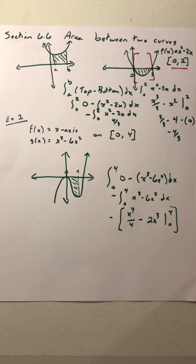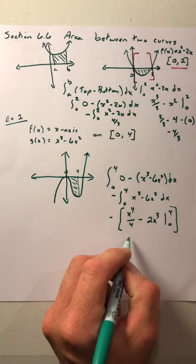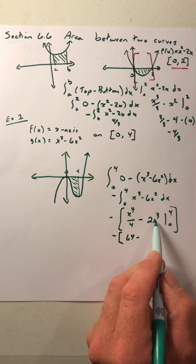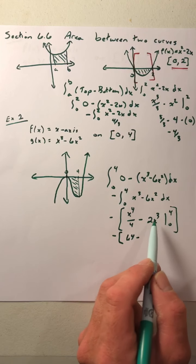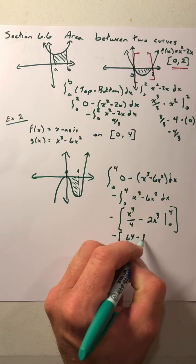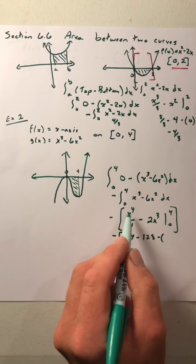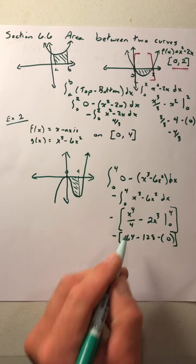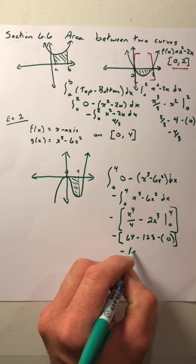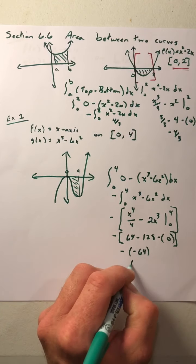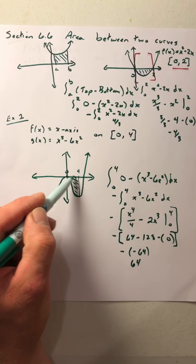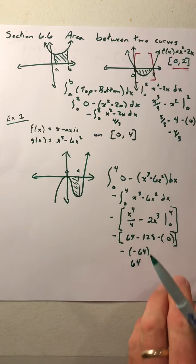We're going to plug our 4 in. We have 4⁴/4, which is actually 4³, so it gives us 64. So the negative of 64 minus — we have 4³, which is 64 times 2, gives us 128. From that, we're going to plug in 0, which gives us 0. So 64 minus 128 gives us negative 64, and the negative of that gives us a positive 64. The area of this region below the x-axis is 64 square units.